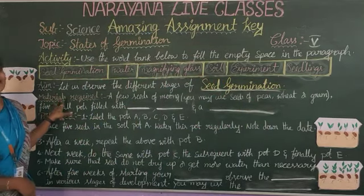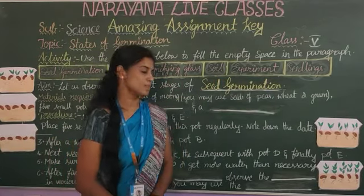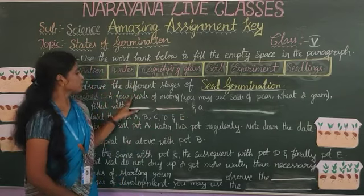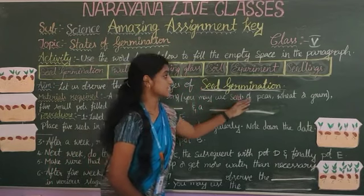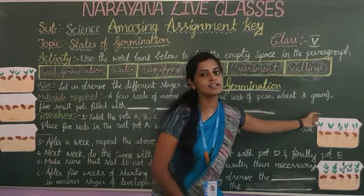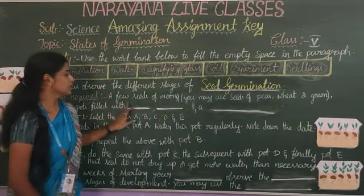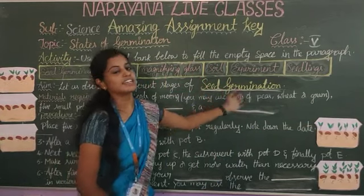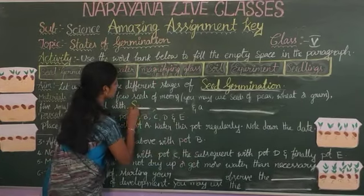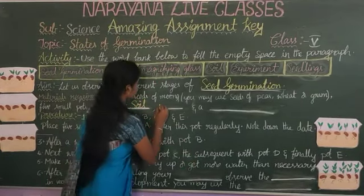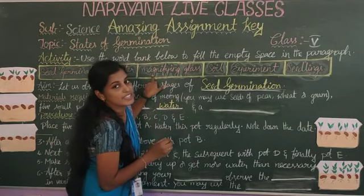So, materials required. What are the materials required for this experiment? You may use seeds of milk, seeds of peas, wheat and grain. And five small pots filled with soil, water and magnifying glass.